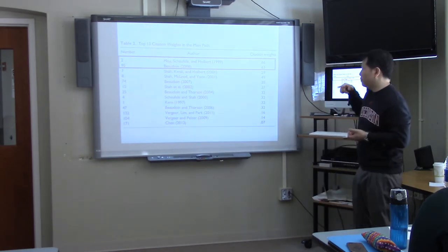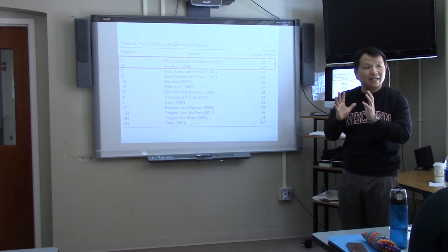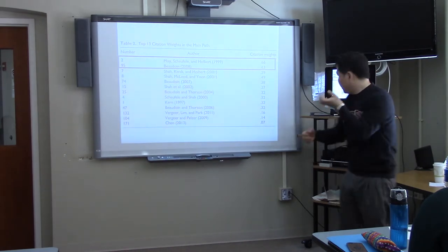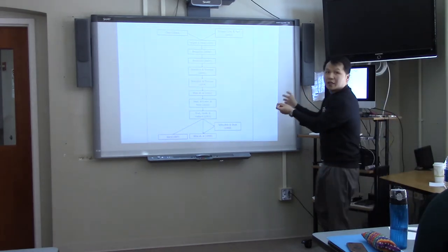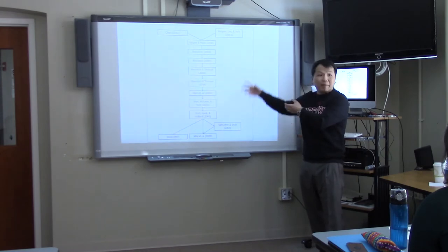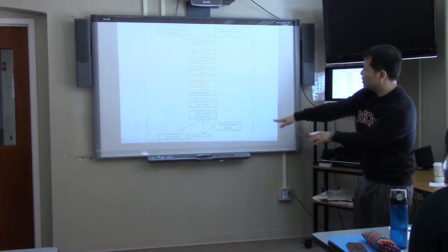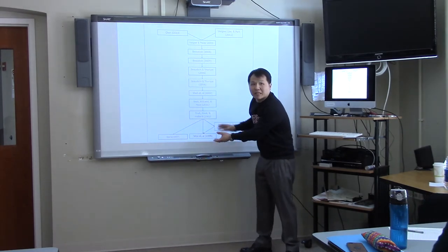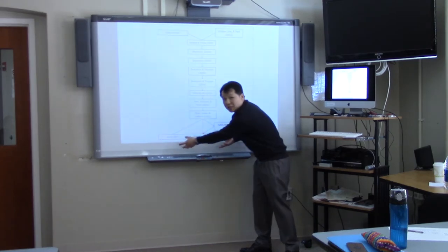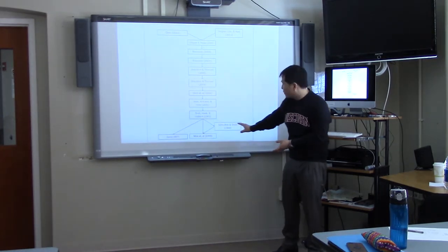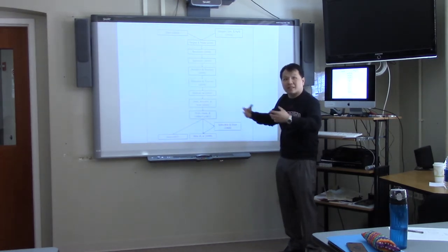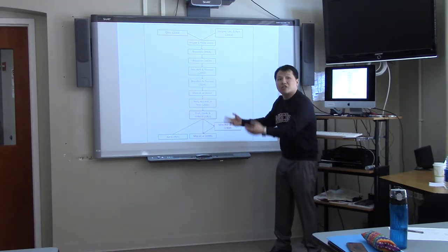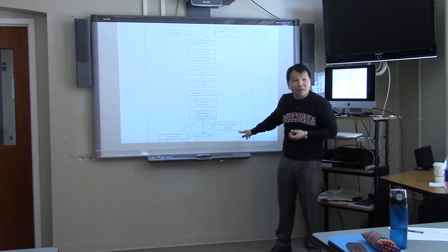Basically, almost all of these articles heavily focused on Robert Putnam's conceptualization of social capital. This figure, derived from main-path analysis, shows that Michael Kern 1997 and Patricia Moy 1999 are the root articles where discussion of social capital started in communication. It was through Dietram and Shah's paper in 2000 in CR that the field's attention was really attracted to the concept.